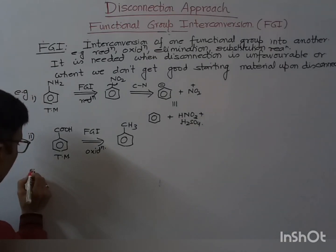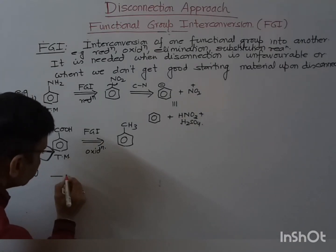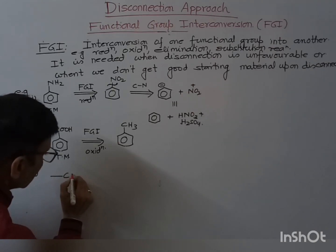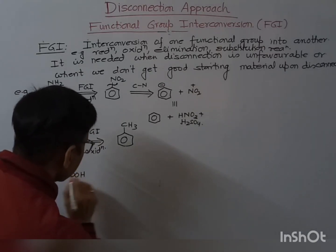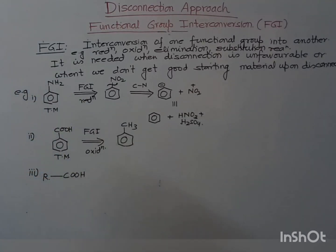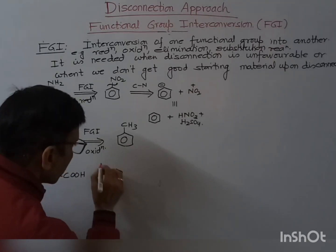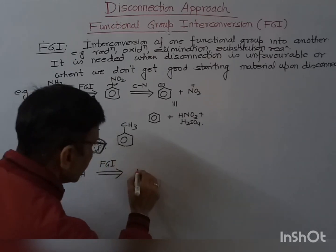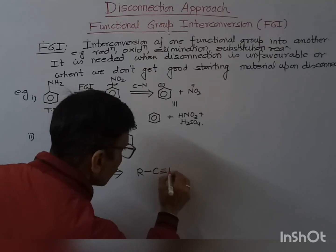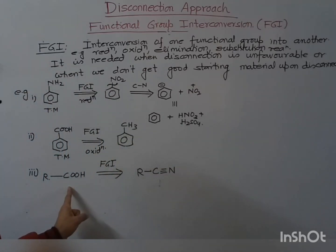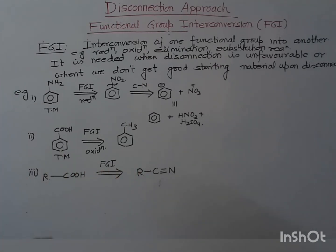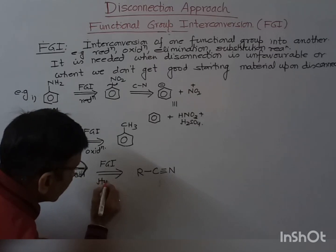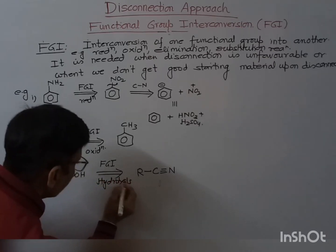In the same way, suppose if you have a COOH group. In such a case, again you will do the FGI and write R–C≡N (cyanide). So the COOH group is converted into this cyanide. If you think in reverse direction, how can we obtain this acid from this cyanide? By hydrolysis or by basic hydrolysis. So you write 'hydrolysis' below the arrow.